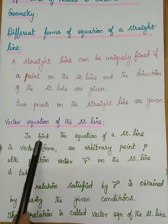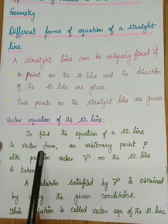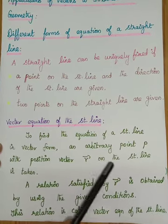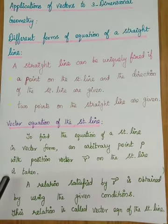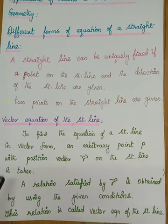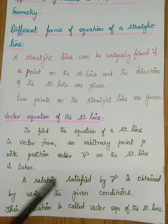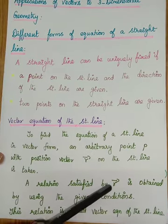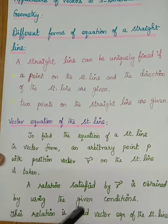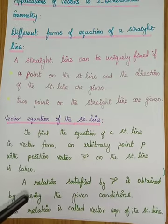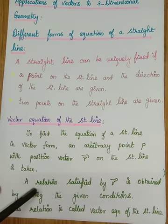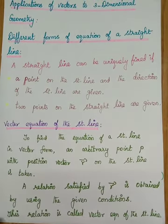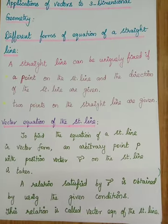To find the vector equation of a straight line, an arbitrary point P with position vector R is taken on the straight line. A relation satisfied by R vector is obtained using the given conditions, and that relation is called the vector equation of the straight line.